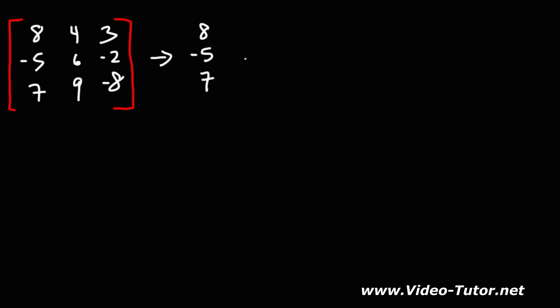And then the second column: 4, 6, 9. And then the third column: 3, negative 2, negative 8. Then we're going to write the first column: 8, negative 5, 7, and then the second column: 4, 6, 9.